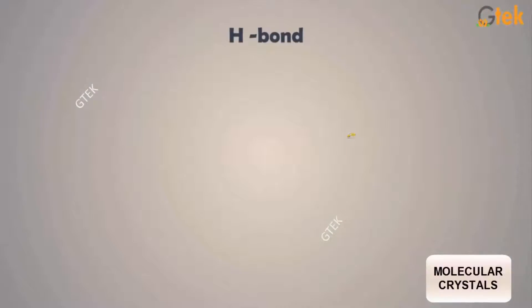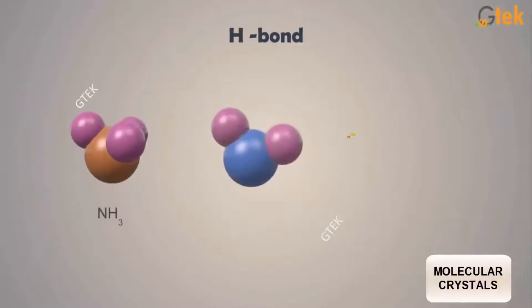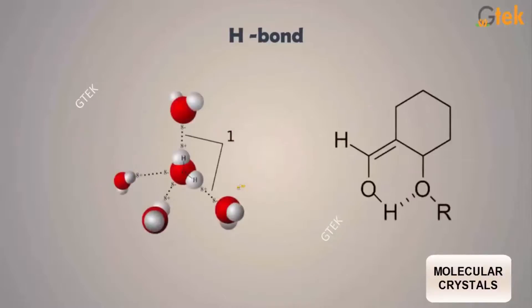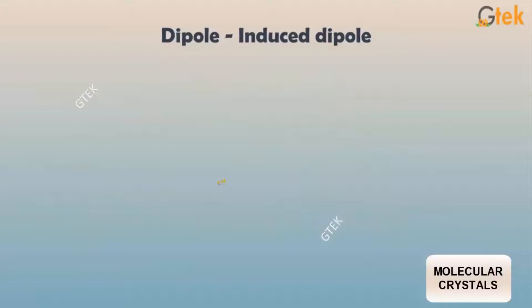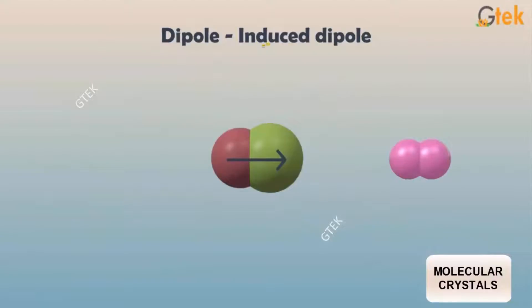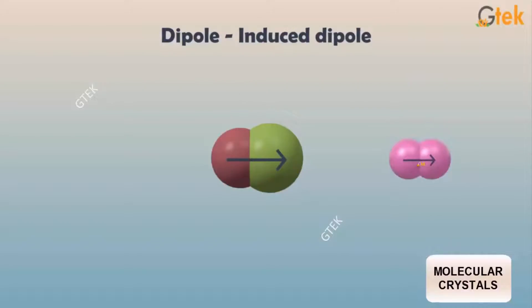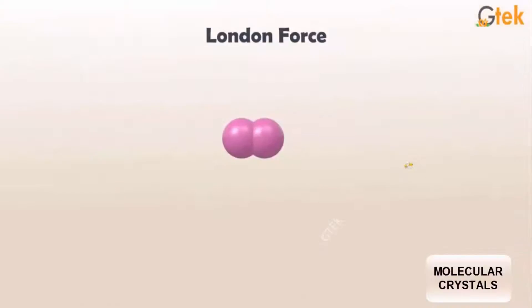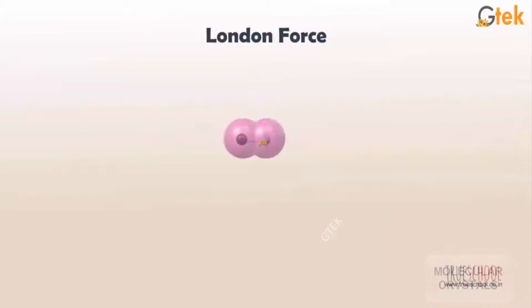Now let's talk about the hydrogen bond — H bond — with ammonia, with water, and varieties of things. You are able to see water having this kind of bonding. The next type is dipole-induced dipole, where a dipole induces another molecule. The attraction between two molecules is called the London force or van der Waals force.